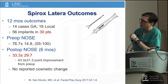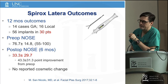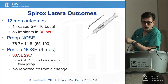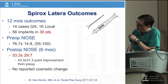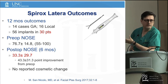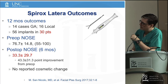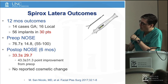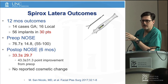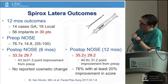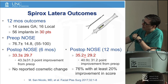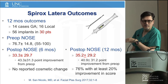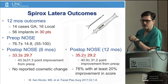We now have 12-month outcomes on the first 56 implants in 30 patients. This initial study was done in Germany. The pre-op NOSE score was 76.7 — very obstructed. The post-op NOSE score at six months was 33.3, representing about a 50% improvement. No cosmetic change was observed, which is important to patients. The 12-month data mirrors the six-month data, which is encouraging — patients are getting good benefit from it for at least a year.